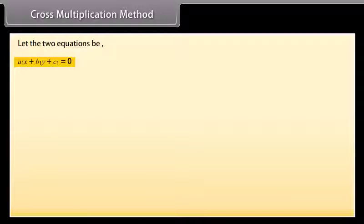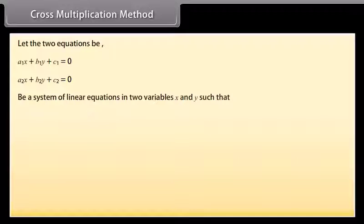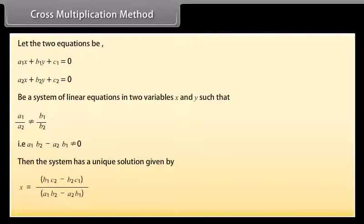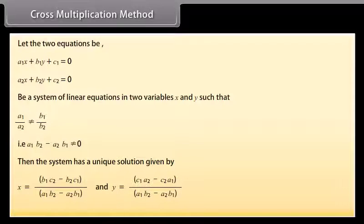Cross multiplication method: Let the two equations be a1x + b1y + c1 = 0 and a2x + b2y + c2 = 0, a system of linear equations such that a1/a2 ≠ b1/b2, i.e., a1b2 − a2b1 ≠ 0. Then the system has a unique solution: x = (b1c2 − b2c1) / (a1b2 − a2b1) and y = (c1a2 − c2a1) / (a1b2 − a2b1).